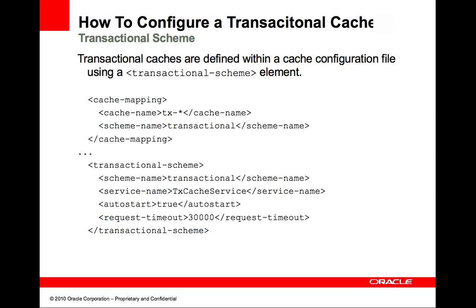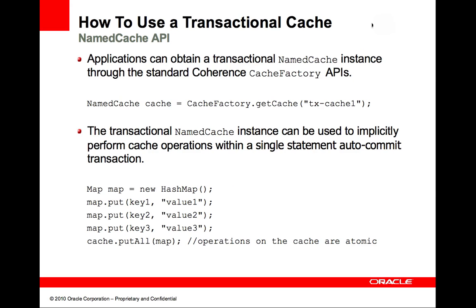How to configure a transactional cache? Transactional caches are defined within the cache configuration file using a transactional scheme element. The transactional scheme includes many of the same elements and attributes that are available to a distributed cache scheme. Note the service name in the transactional scheme — this service name is given when creating transactional connections. The named cache API can be used to perform cache operations implicitly within the context of a transaction, though this approach does not allow an application to change the default transaction behavior. Transactions are in autocommit mode when using the named cache API approach, meaning each operation is immediately committed when successfully completed. Multiple operations cannot be scoped to a single transaction. This approach is ideally suited for ensuring atomicity guarantees when performing single operations such as put all.